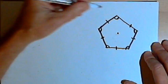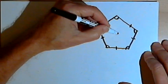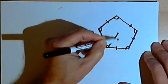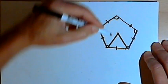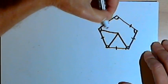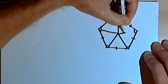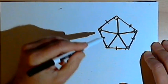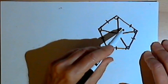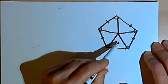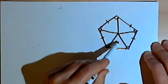I'm going to mark the center and then I'm going to draw a line from the center to each of the five vertices of the pentagon. Now what that's going to do is create five congruent triangles.